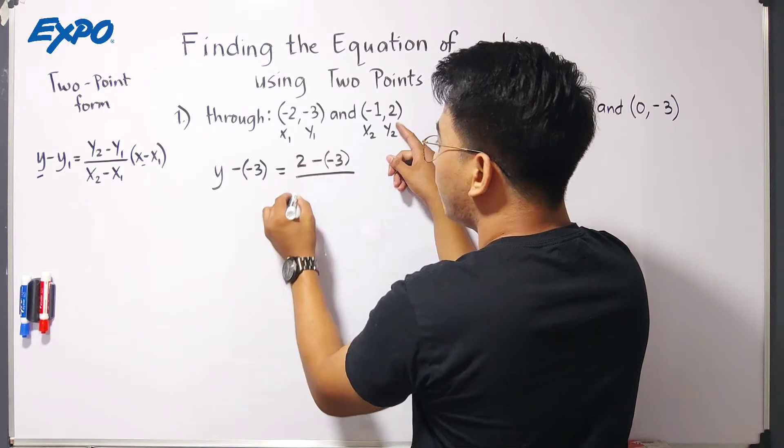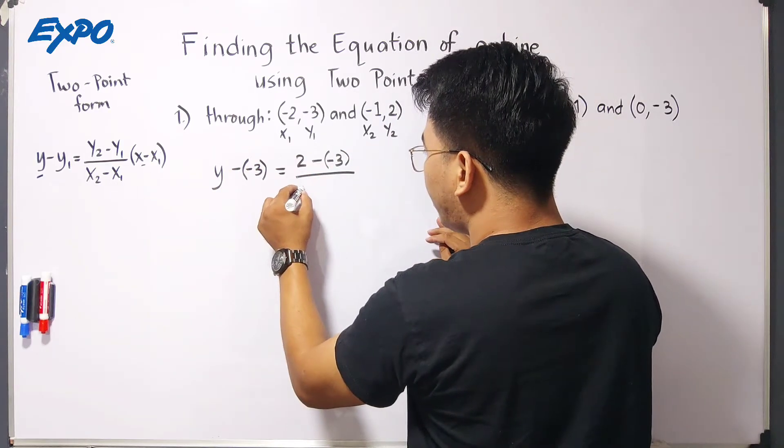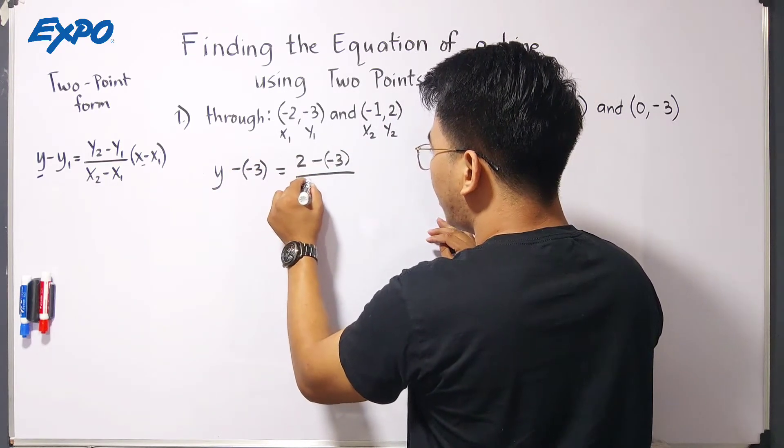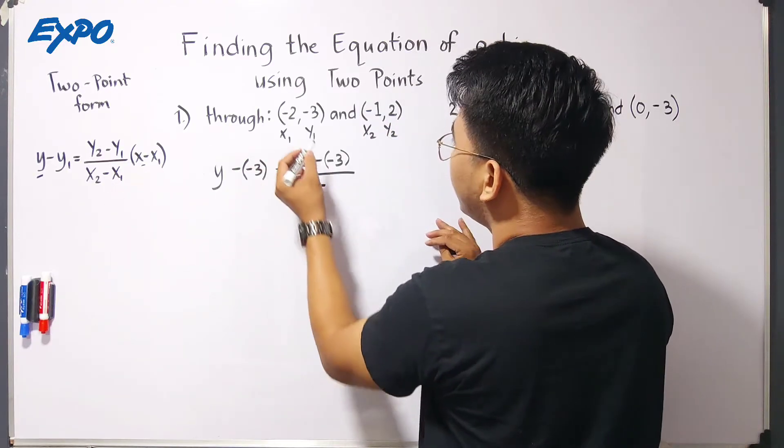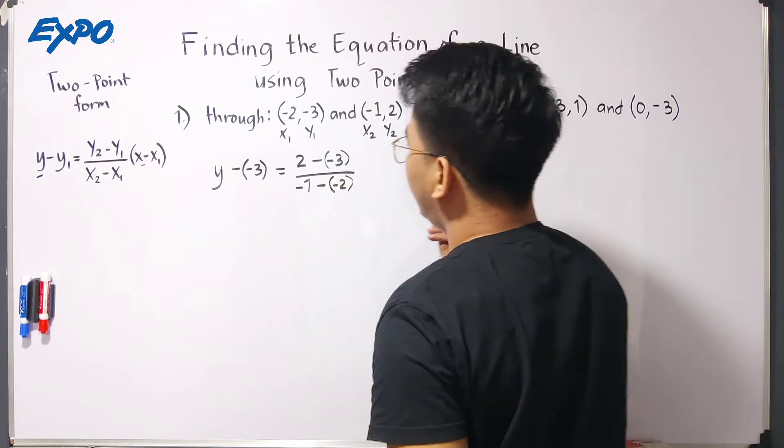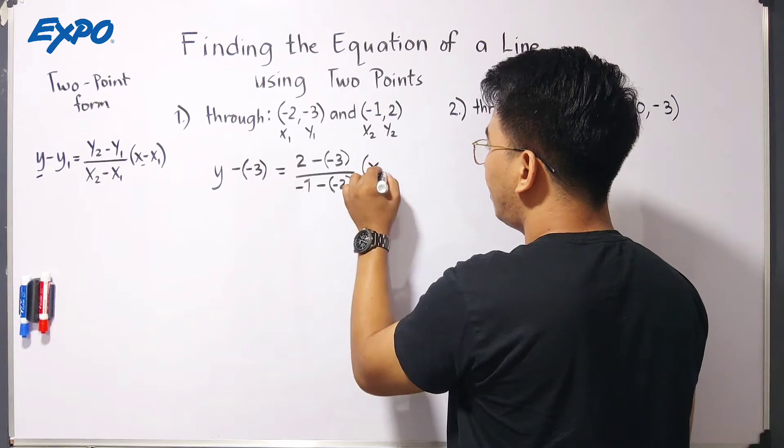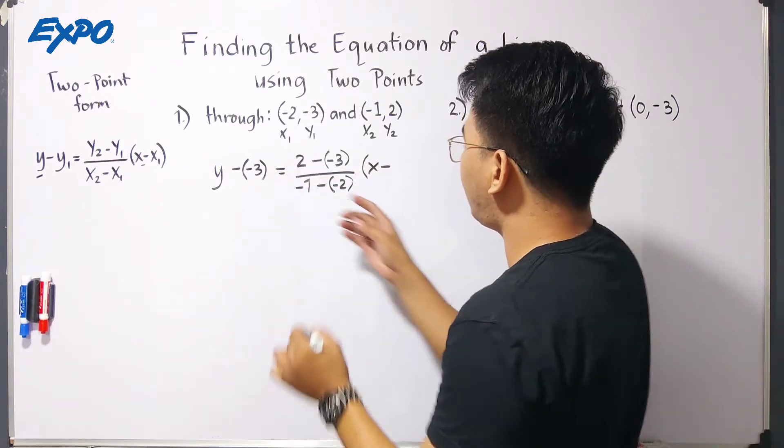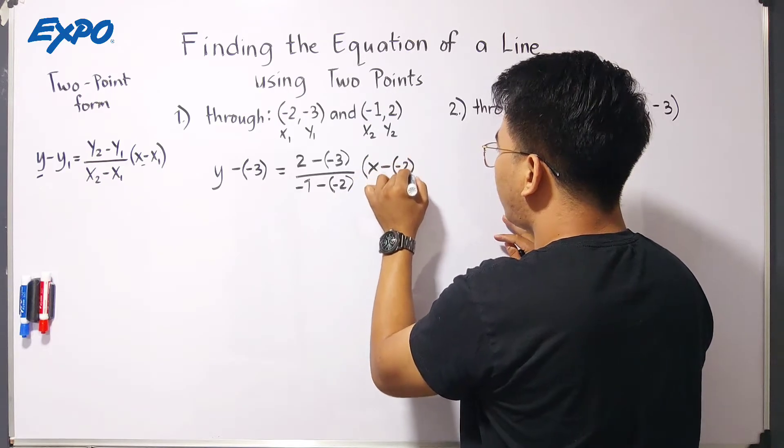Parenthesis again, negative 3, over x sub 2, which is negative 1, minus x sub 1, that is negative 2, parenthesis again. And then times x minus your x sub 1, which is negative 2. So, we will use a parenthesis here, minus 2 or negative 2.